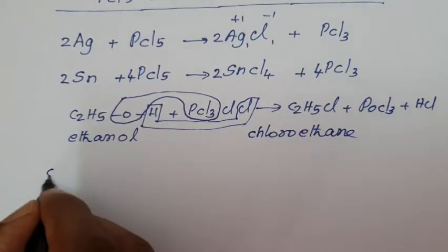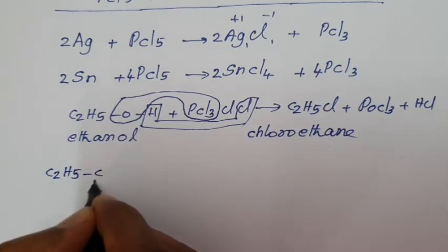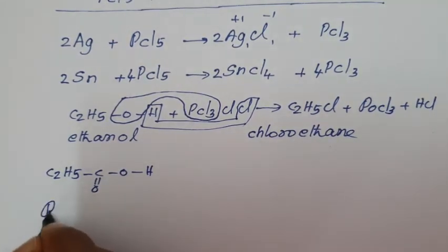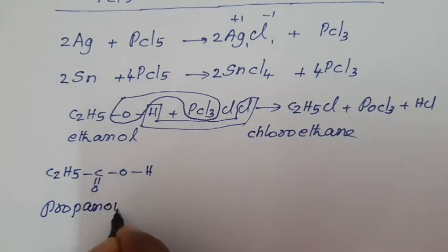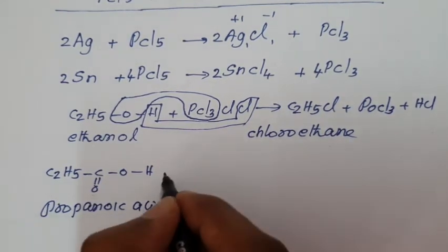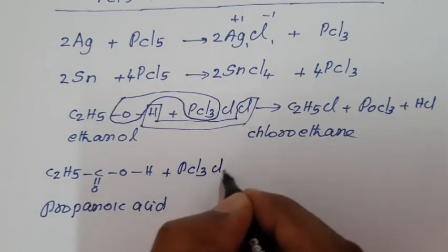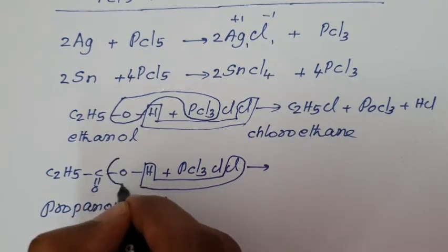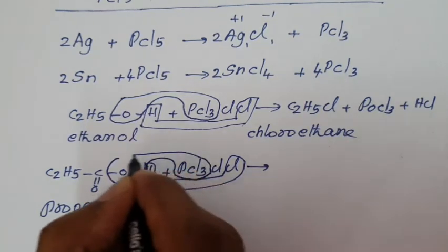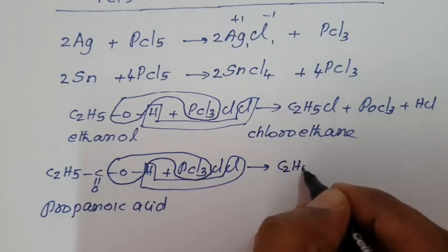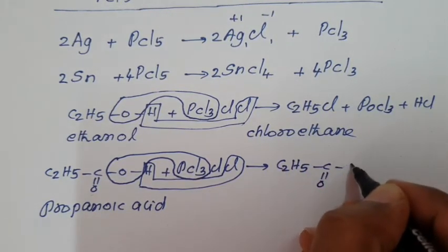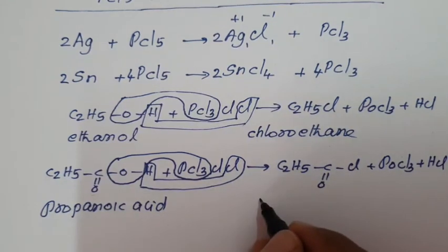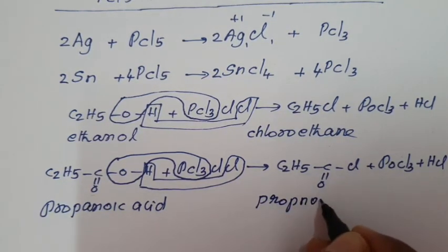Similarly for carboxylic acid: propionic acid (C₂H₅COOH; IUPAC name: propanoic acid, 3-carbon chain). When treated with PCl₅, one H and one Cl are removed as HCl, oxygen and PCl₃ are removed as POCl₃, and chlorine is added to the carbonyl carbon, giving C₂H₅COCl (propanoyl chloride) plus POCl₃ plus HCl.